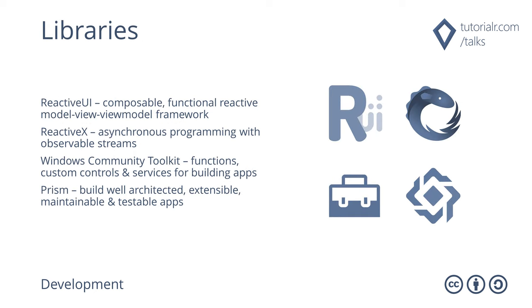Uno Platform has support for .NET libraries such as ReactiveUI, an advanced composable functional reactive model-view-viewmodel framework; ReactiveX for asynchronous programming with observable streams; Windows Community Toolkit, which is a collection of helper functions, custom controls, and app services; and Prism for building XAML-based applications using proven patterns and development practices.